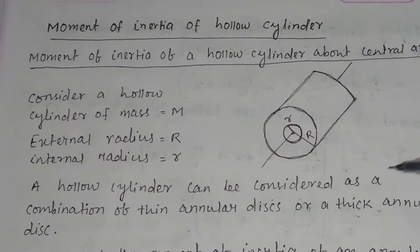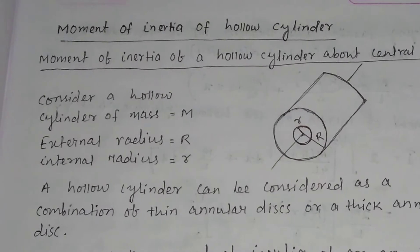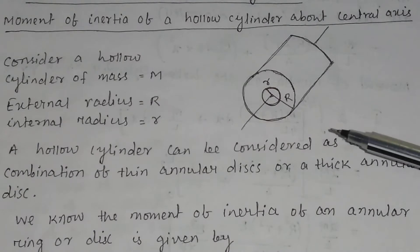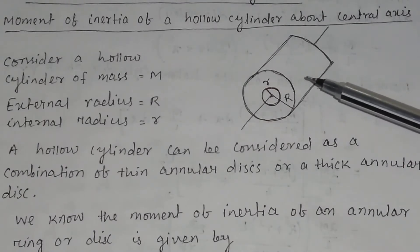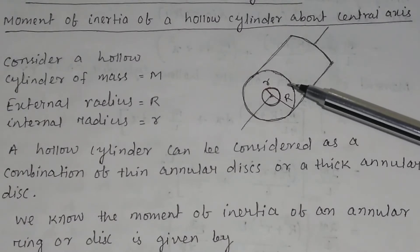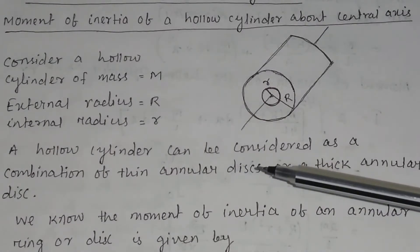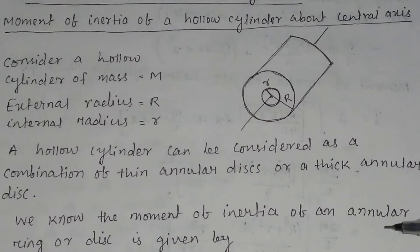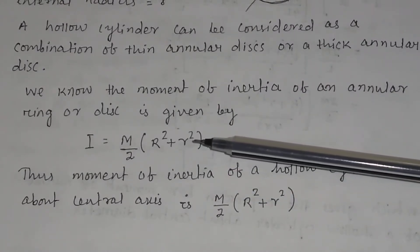A hollow cylinder can be considered as a combination of thin annular discs or thick annular discs. Either you consider this hollow cylinder as a thick annular disc or as a combination of thin annular discs. We know that the moment of inertia of an annular disc or ring is given by I equal to m/2 times (R² + r²).